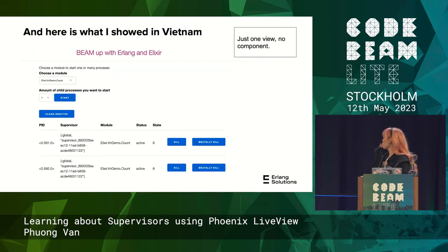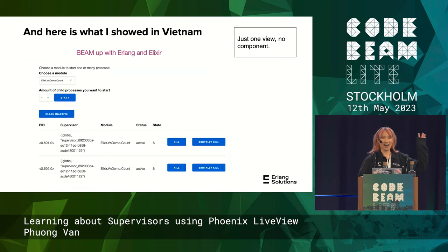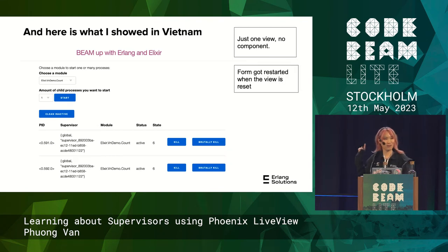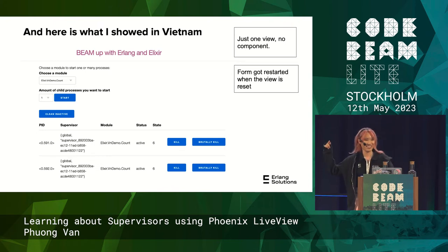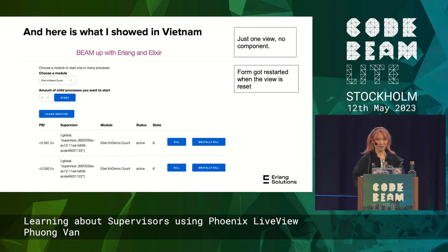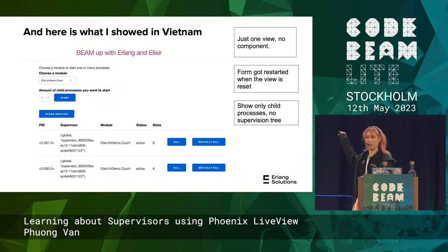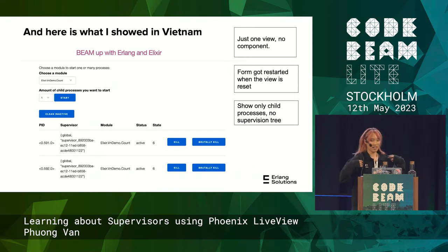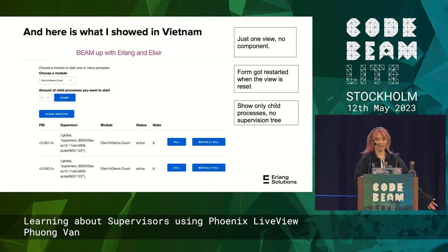It was just one component, one view — everything in one live.ex page. The form sometimes got restarted with the live refresh back to its default state. And it only showed the worker processes running and their state — nothing else. I also wanted to show the supervision tree, like an Observer wannabe.